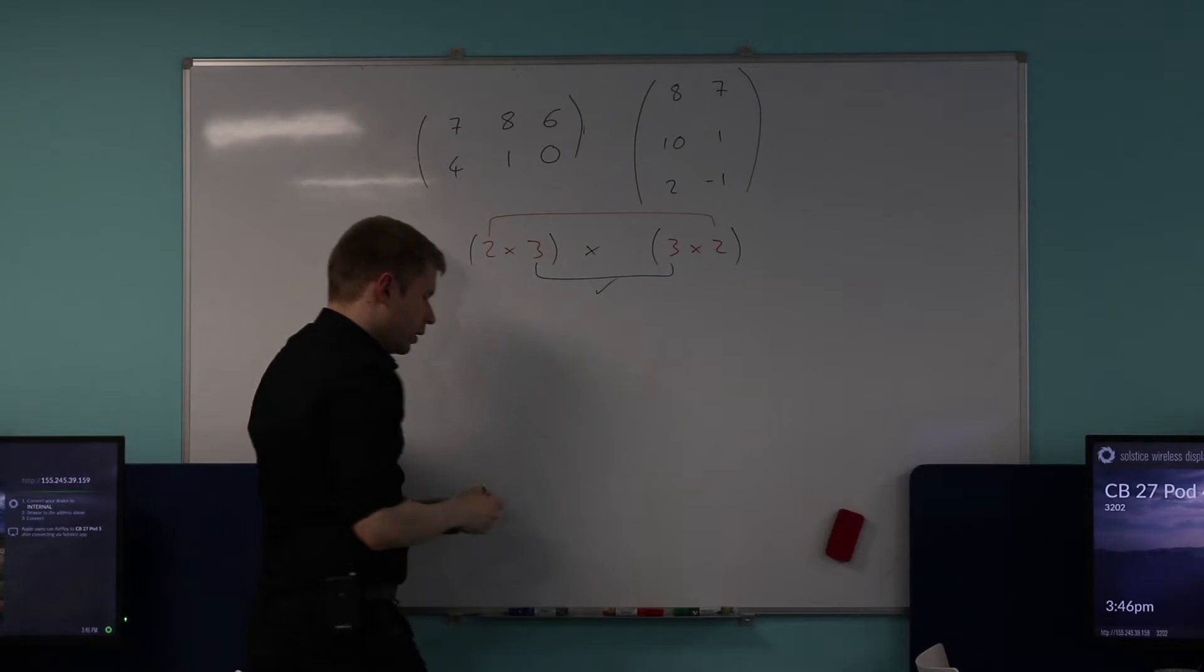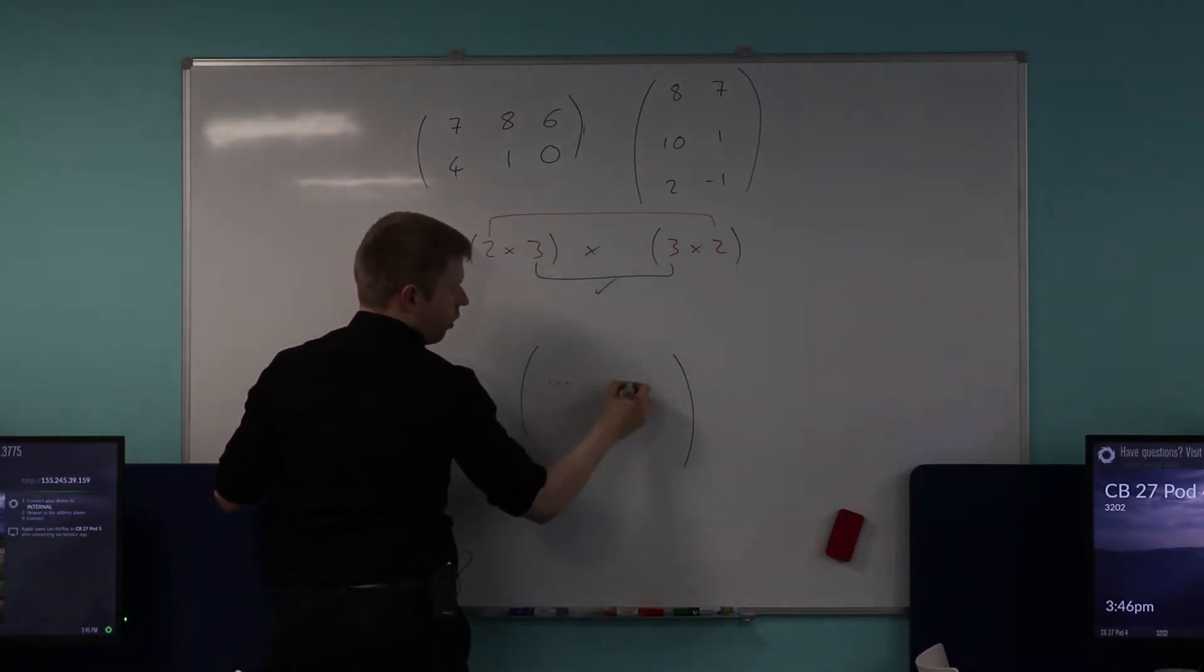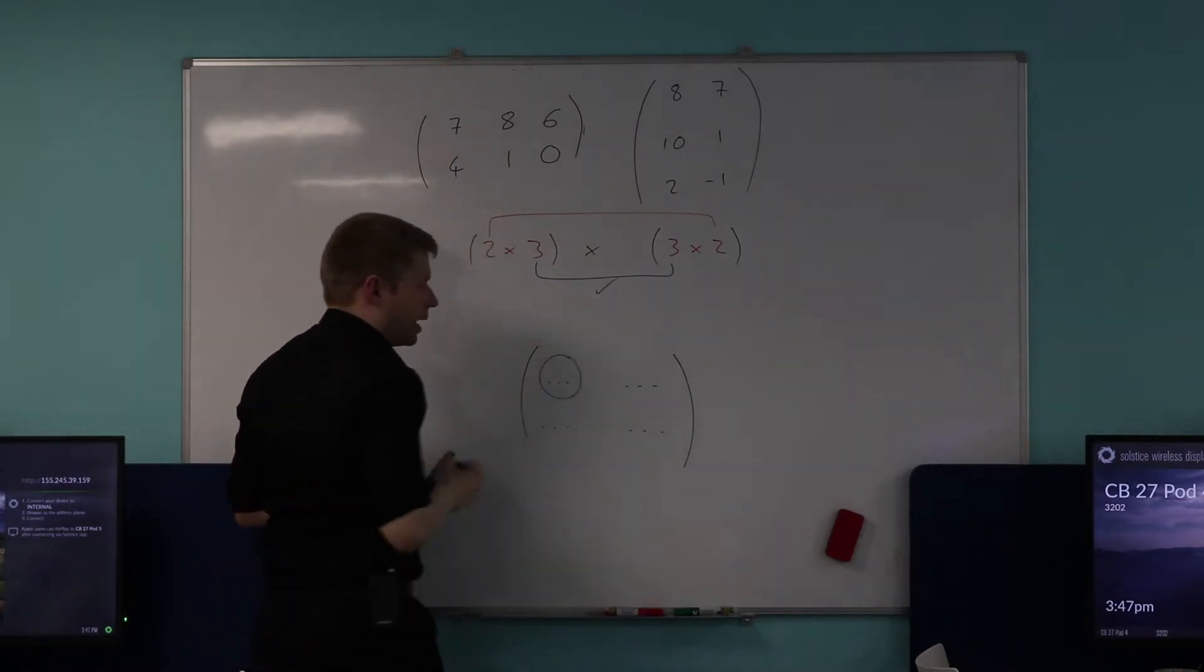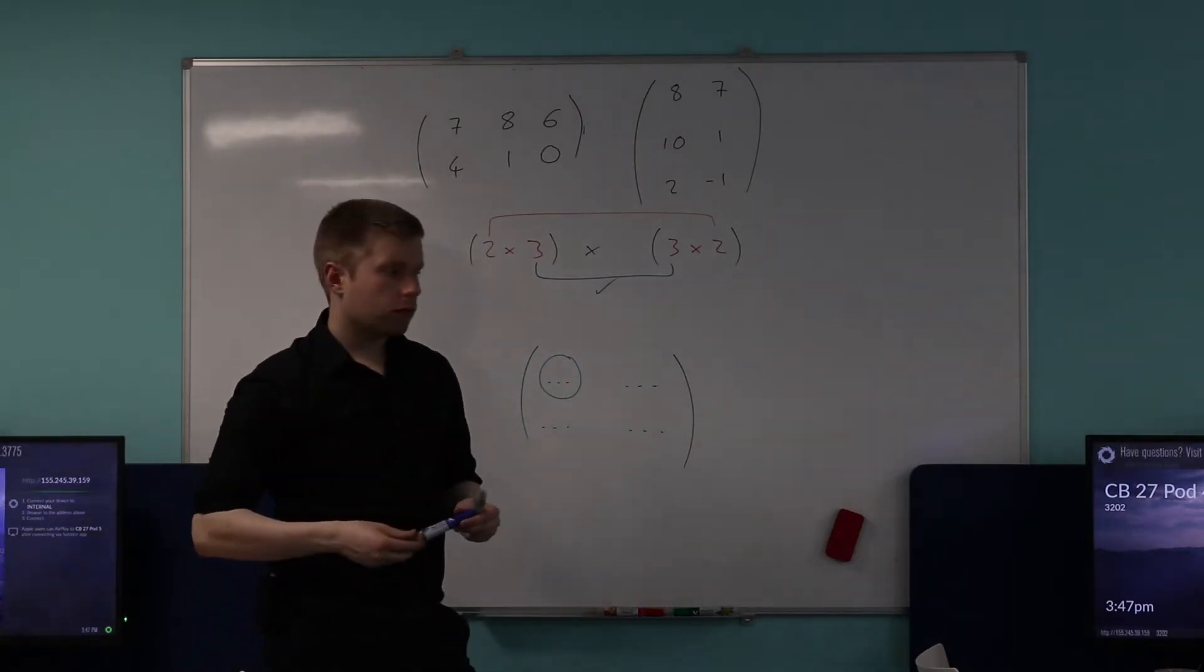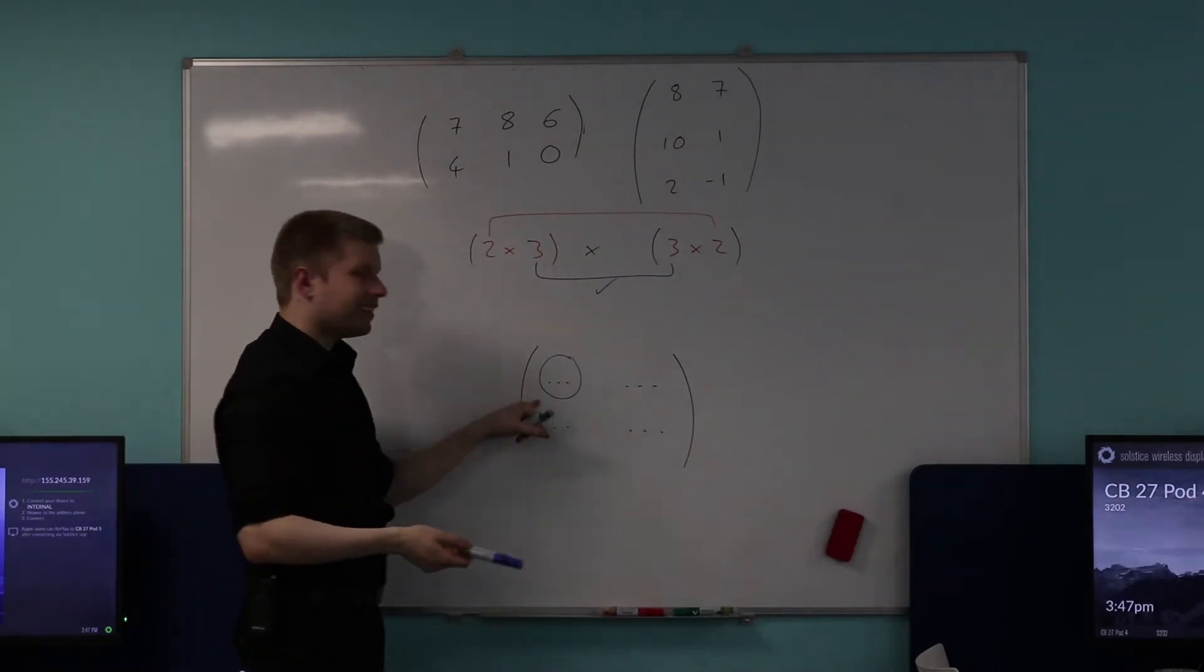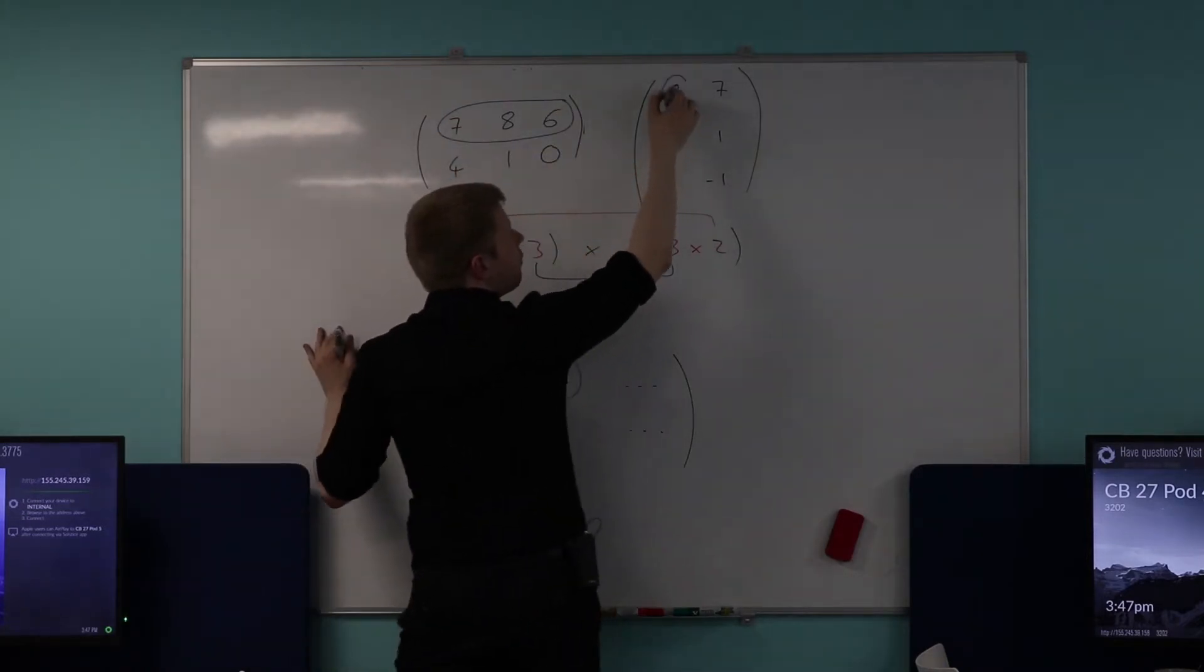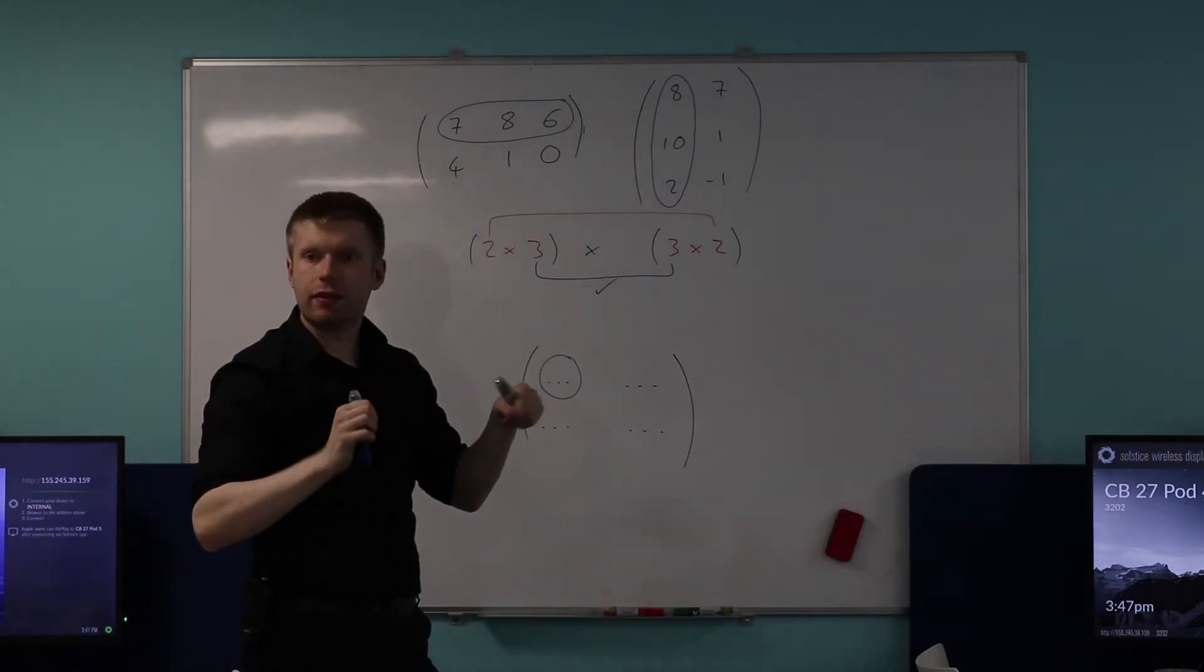What are the dimensions of the resulting matrix? Two by two. Two by two. Okay, because that's what the outer two dimensions tell me. So I'm expecting a matrix down here which has two rows and two columns. So two rows and two columns. Is that okay? Right. If I want to find this element here, if I want to find this element here, what element would that be? Absolutely right. Yeah, I heard it in lots of places. Okay, so first row, first column, which means I'd be using the first row from this matrix and the first column from this matrix. Is that okay?